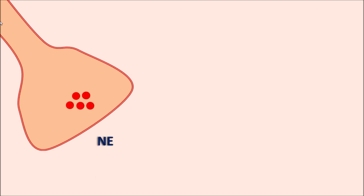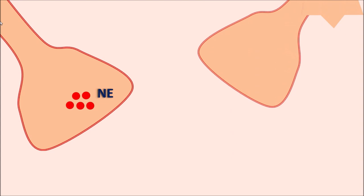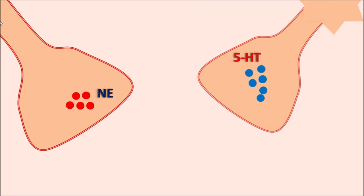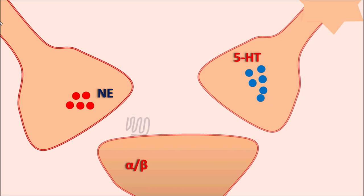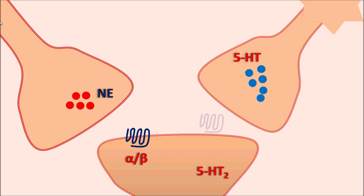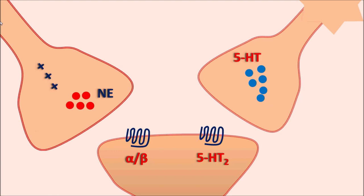Within the CNS, different types of mediators work together. One important mediator is norepinephrine, and another is serotonin (5HT). These mediators act on corresponding receptors on postsynaptic neurons — alpha and beta receptors for norepinephrine, and 5HT2 receptors for serotonin. When an action potential reaches the presynaptic nerve terminals, the mediators are released and act on these receptors.